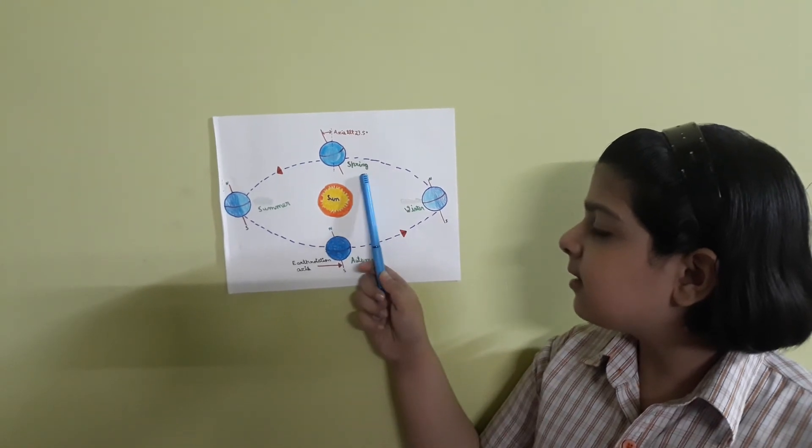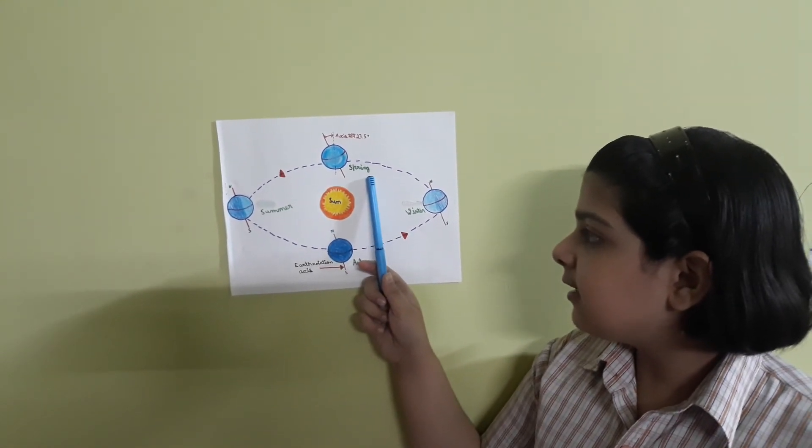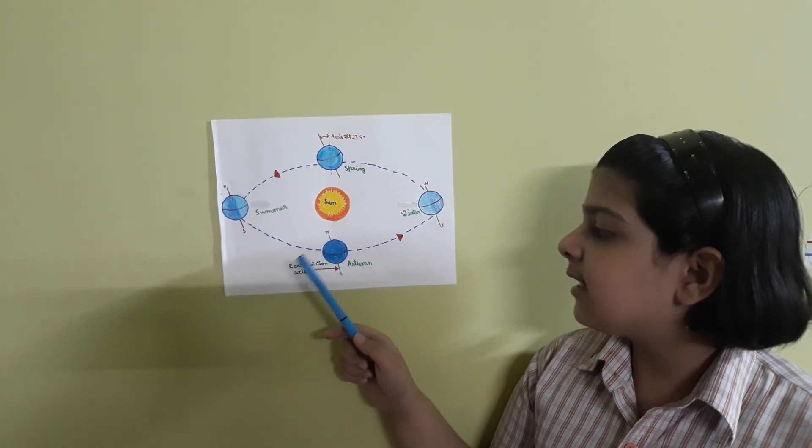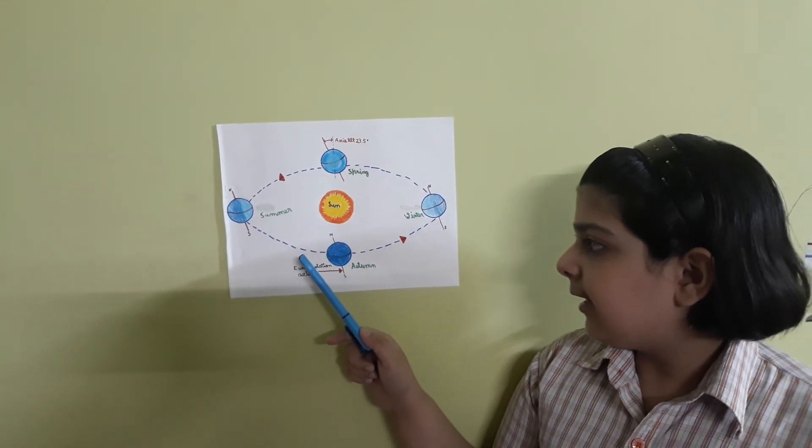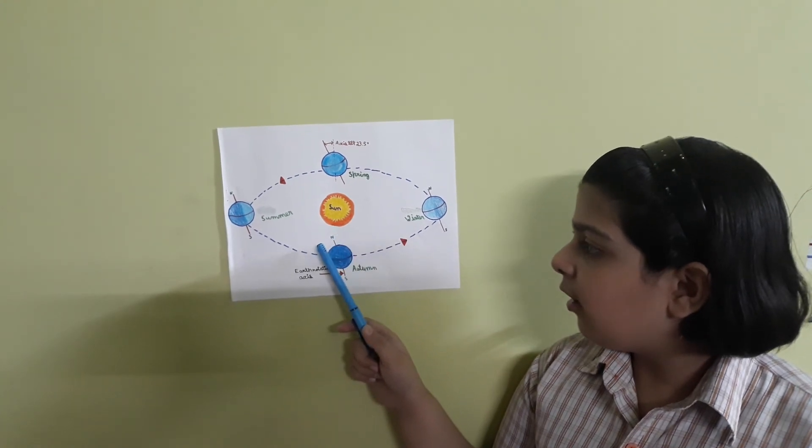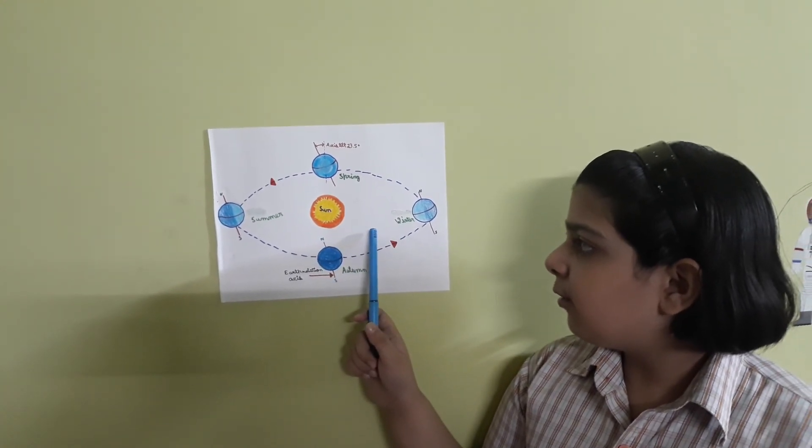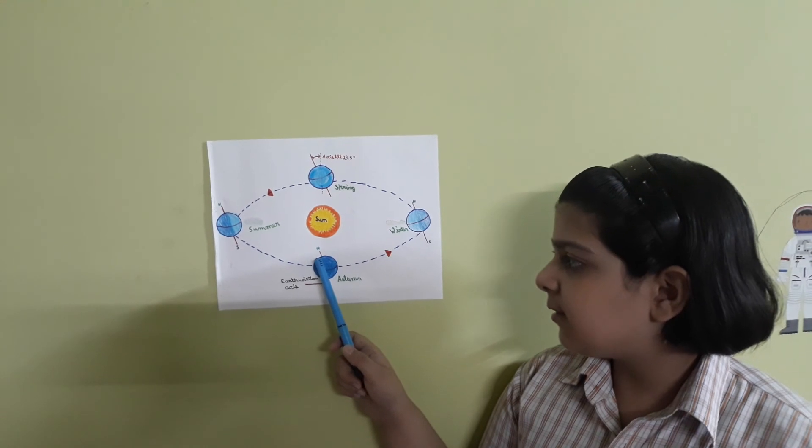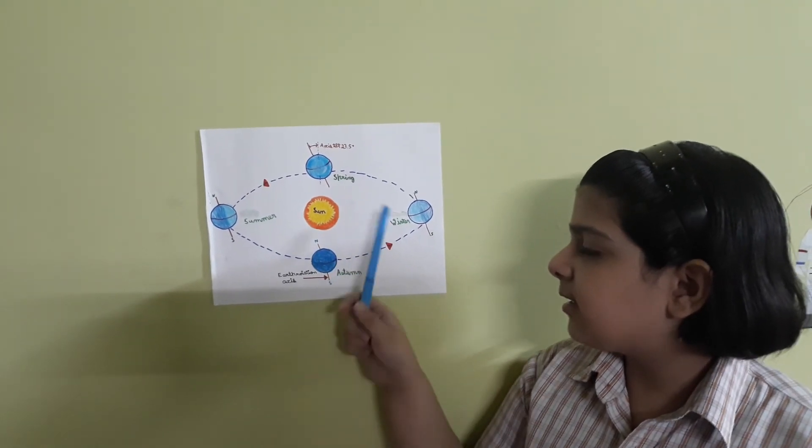During autumn and spring seasons, both hemispheres receive the sunlight equally. It is neither hot nor cold in any hemisphere during autumn and spring seasons.